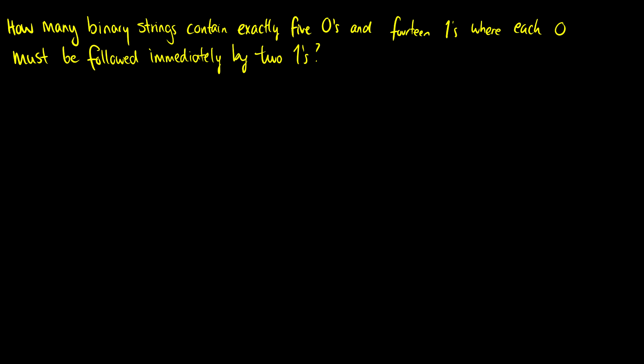Question number two. How many binary strings contain exactly five zeros and 14 ones, where each zero must be followed immediately by two ones? Okay, so let's draw what we have here. We have five zeros and we have 14 ones.